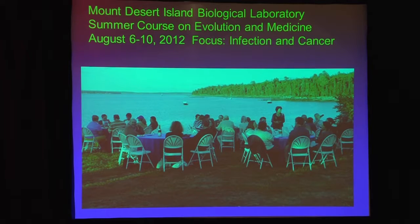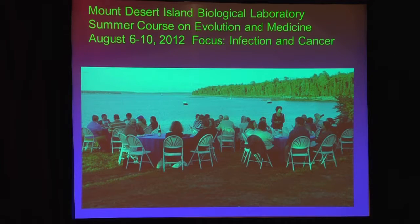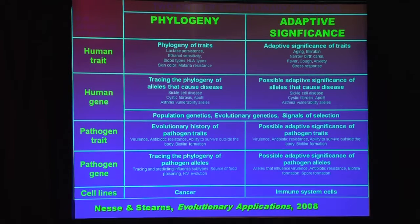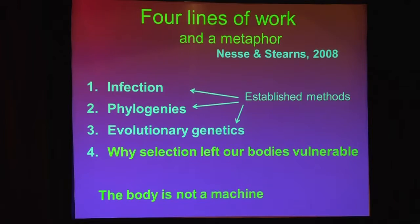Most fun of all is a course that I run at Mount Desert Island in Arcadia National Park. You are all invited. The next version is about infection and cancer in particular — about half evolutionary medicine in general and half infectious disease and cancer. Eight faculty from around the world teach this course for 40 students. So what's the landscape of this evolutionary medicine business? There are a whole bunch of different topics here, not just the one I'm going to talk about.